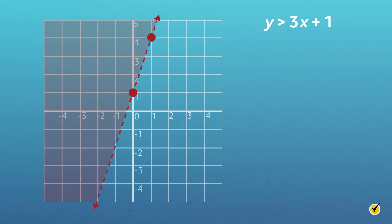The finished graph has a dashed line with a shaded region to its left. All possible solutions are points to the left of the line graphed.